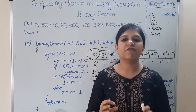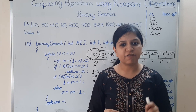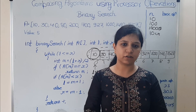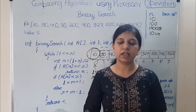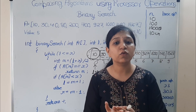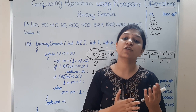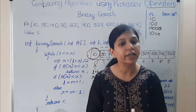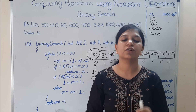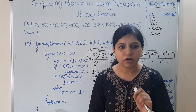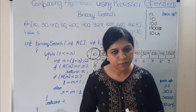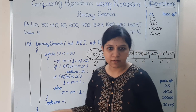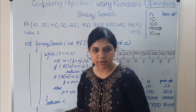To summarize binary search: every time we compare with the middle element. If equal, we return the middle index. If not equal, we decide whether to move left or right, and accordingly update l or r.